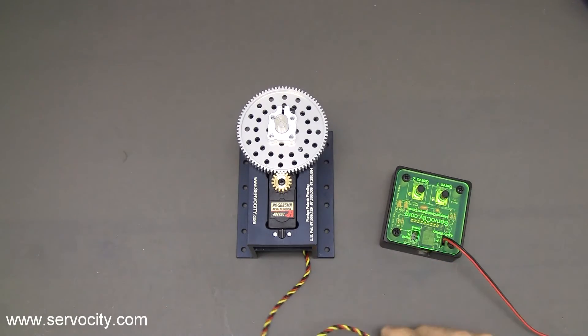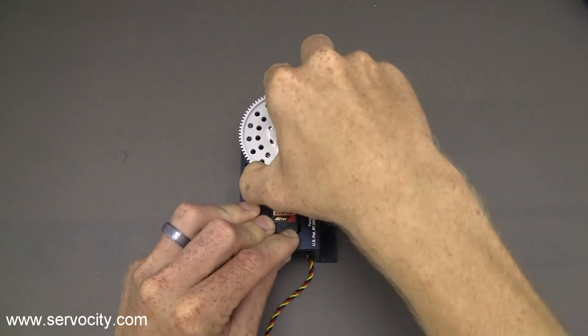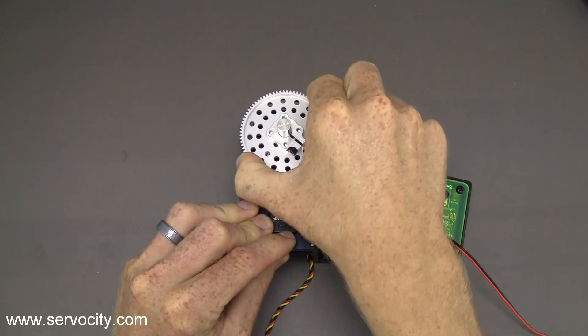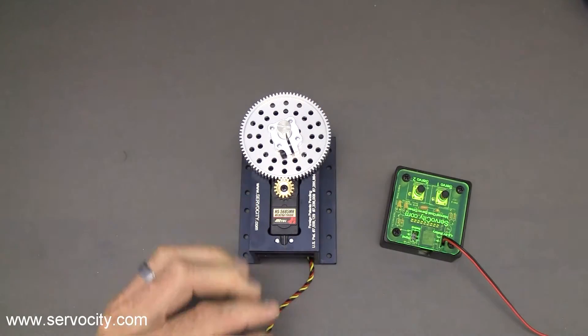Now if you unplug the servo and rotate the shaft by hand, which you're not supposed to do, I'm going to go past the mechanical limit of the potentiometer on the servo power gearbox.